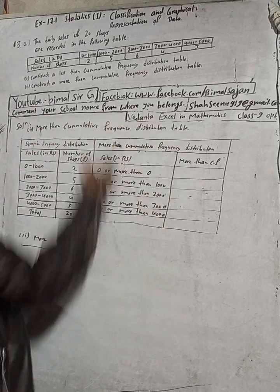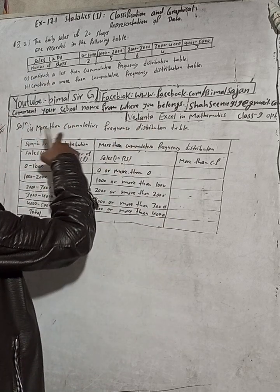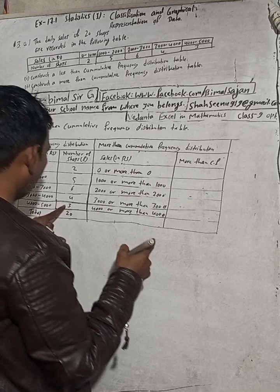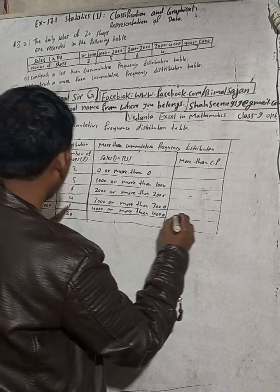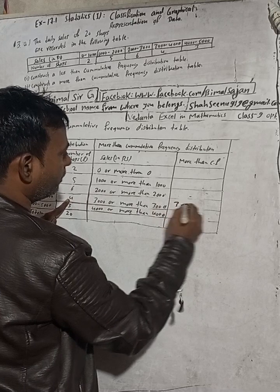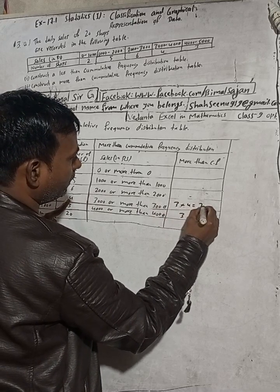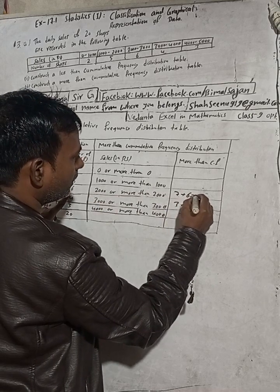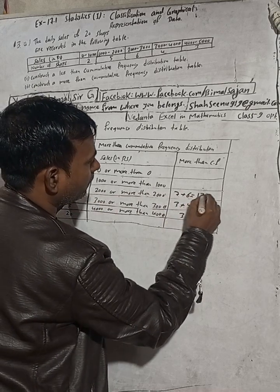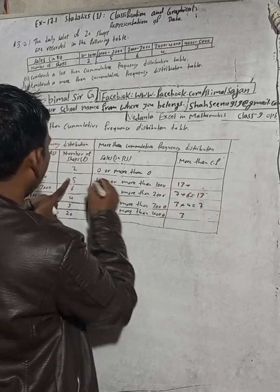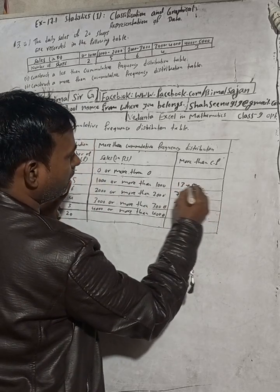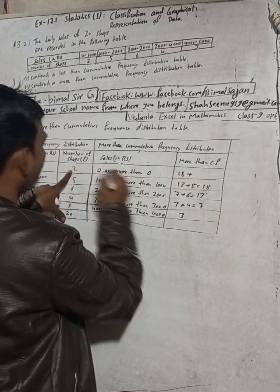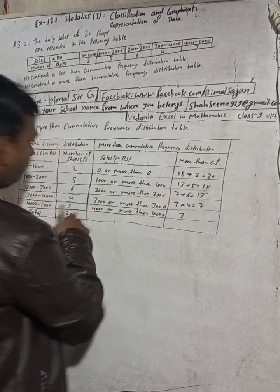In the less than cumulative frequency we started from the top, but here we are going to start from the bottom. The last frequency is 3 — write 3. Then 3 plus 4 equals 7 — write 7. Then 7 plus 6 equals 13 — write 13. Then 13 plus 5 equals 18 — write 18. And finally 18 plus 2 equals 20. So the total is 20. The more than cumulative frequencies are: 20, 18, 13, 7, 3.